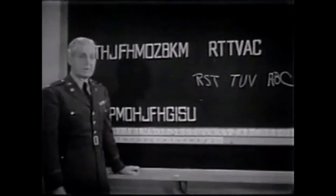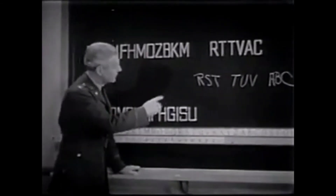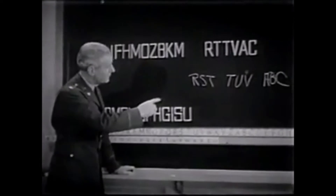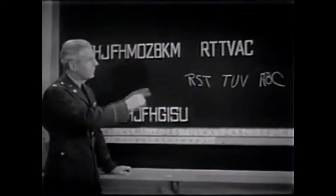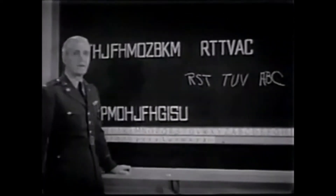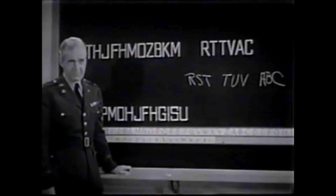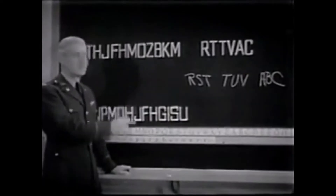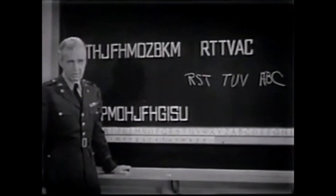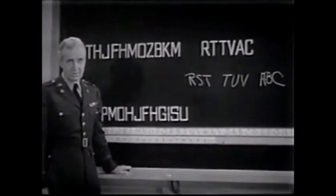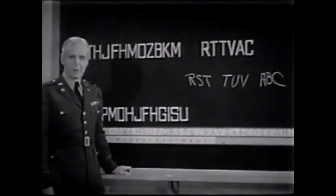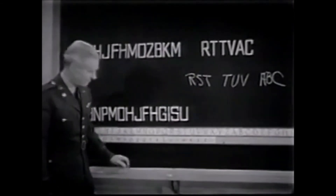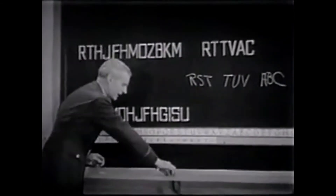In the alphabet, S falls between R and T, U falls between T and V, and B falls between A and C. What this is, then, is the in-between code. And I think if we attack our longer words, we'll have no difficulty in cracking it.